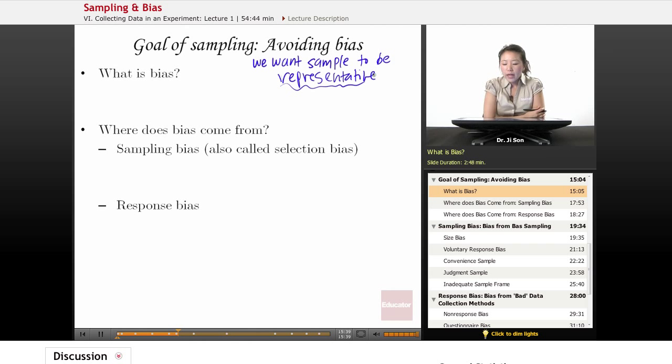That somehow our sample is giving us values that are too small or too large or skewed in some way away from the population.